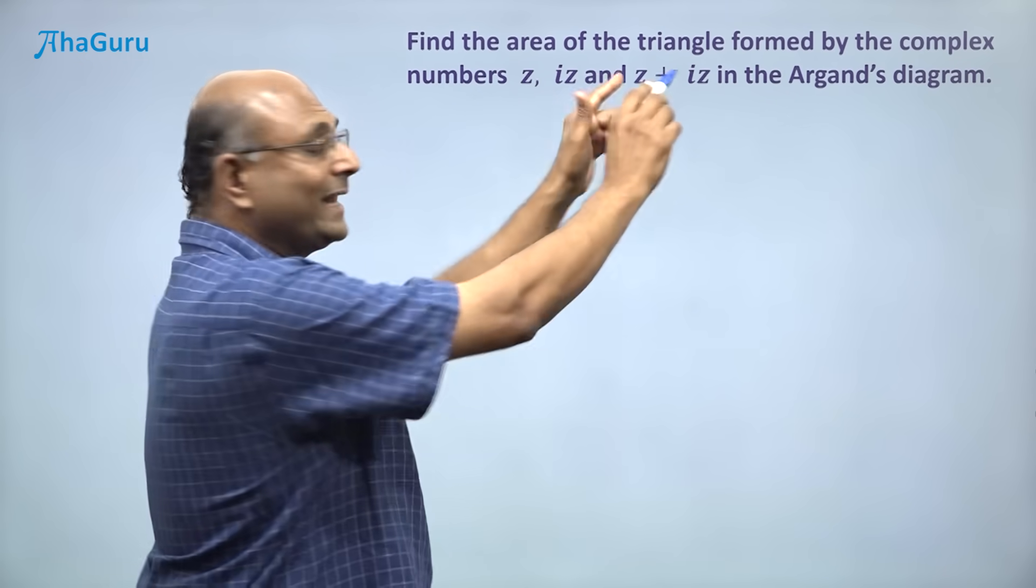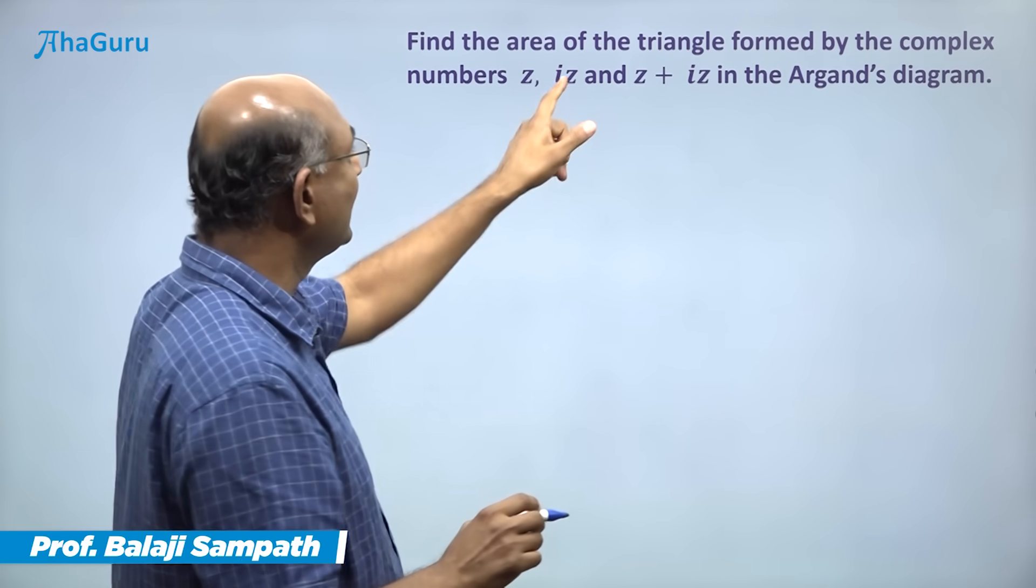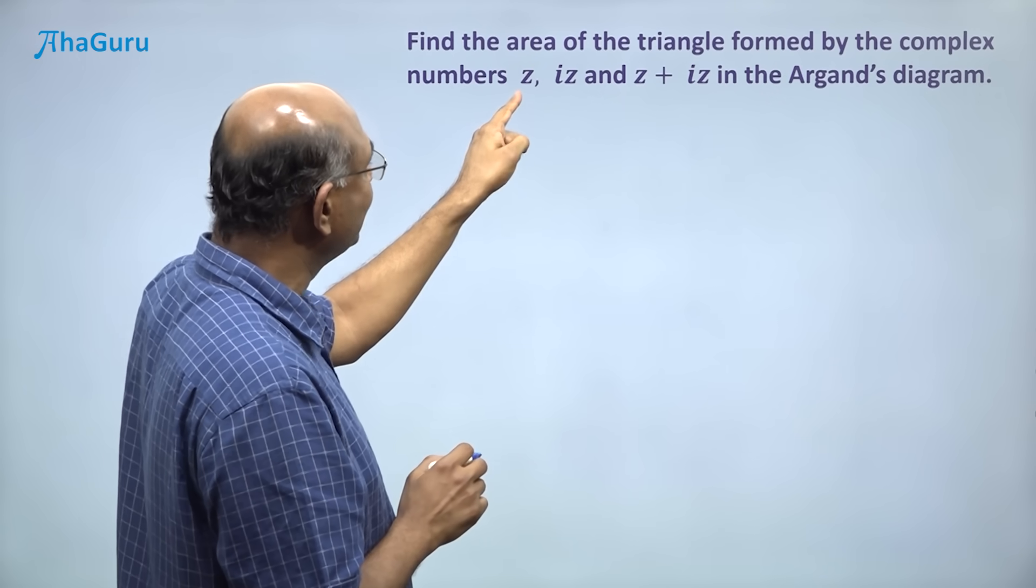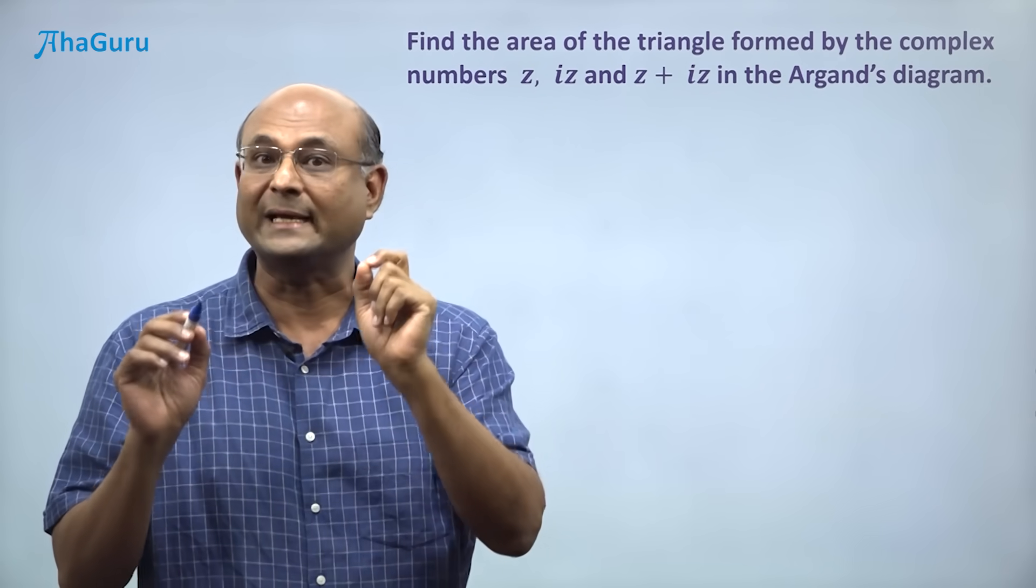How do we solve a question like this in complex numbers? The area of a triangle is asked and we have been given complex numbers z, iz, and z plus iz.